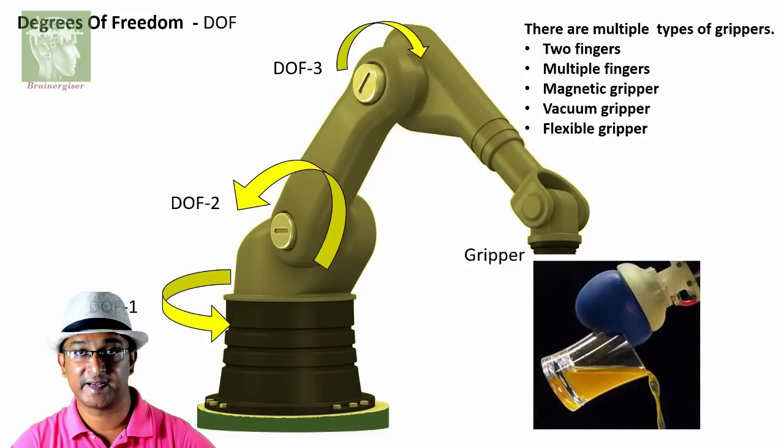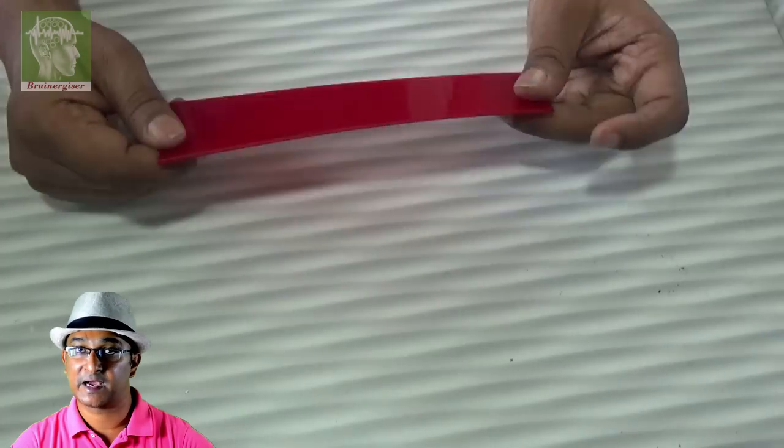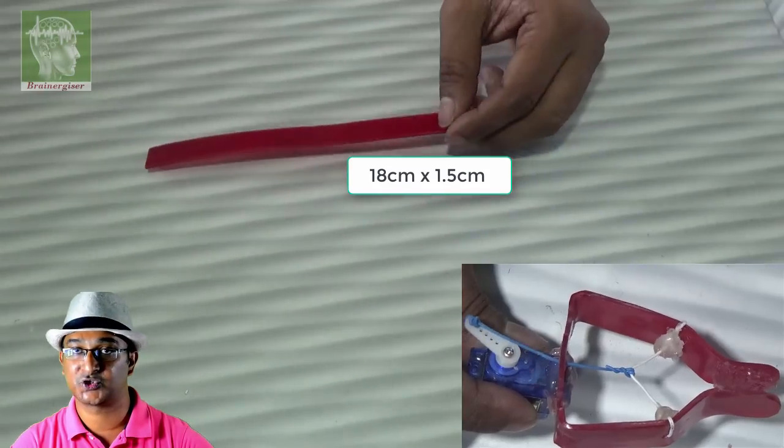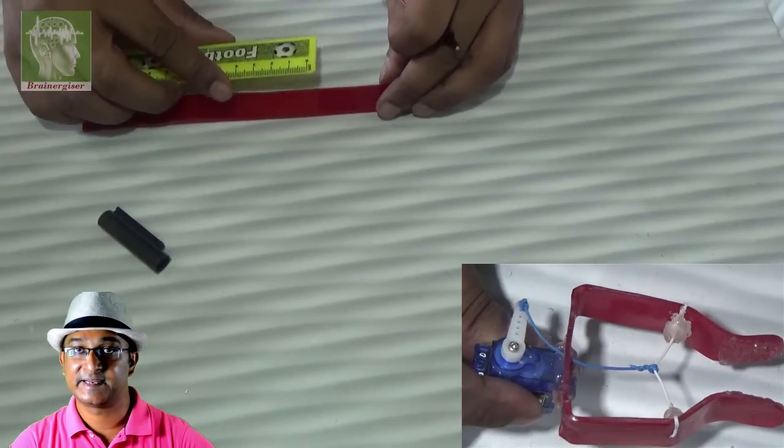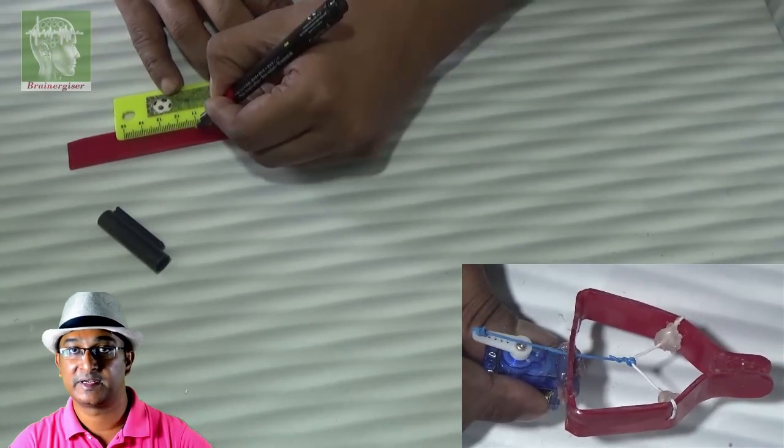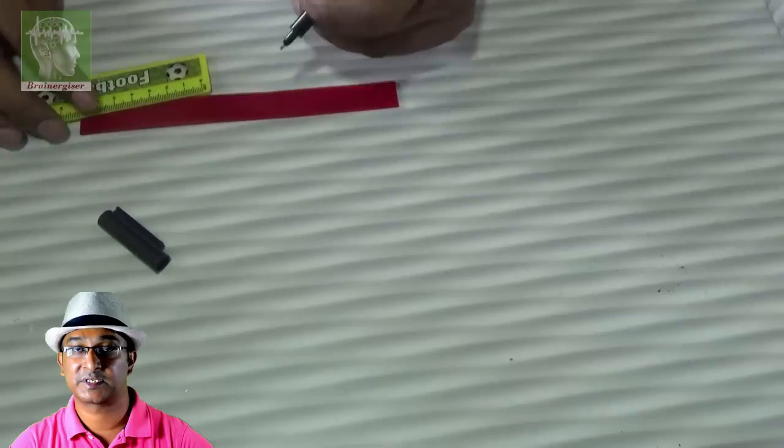Now to make our gripper we need 2mm thick acrylic sheet, 18cm into 1.5cm. We'll divide that seven, four, seven.